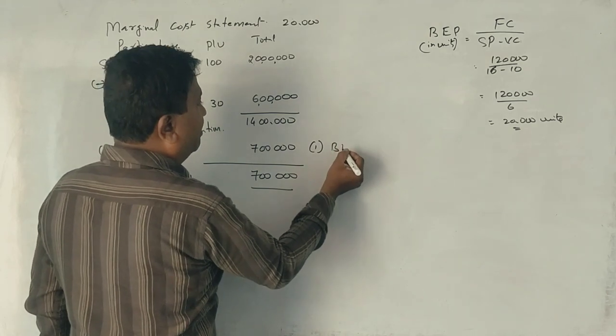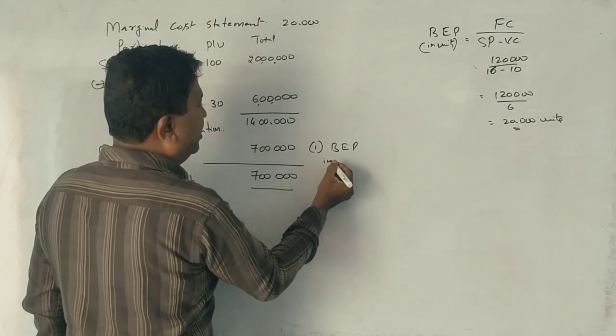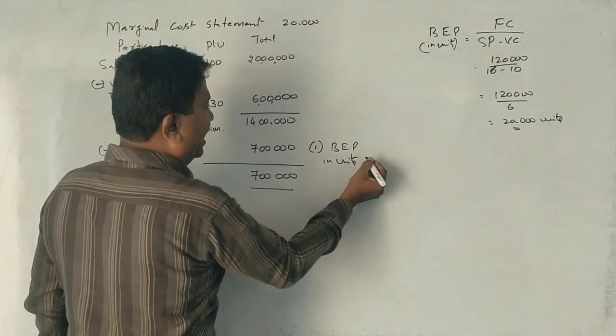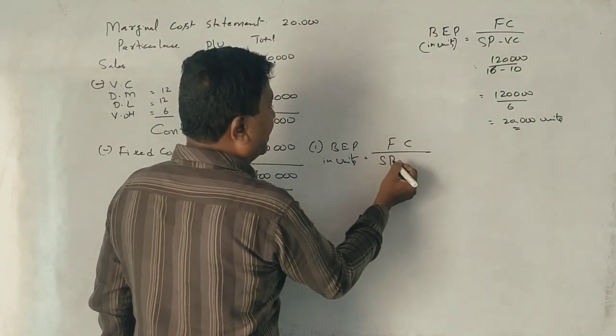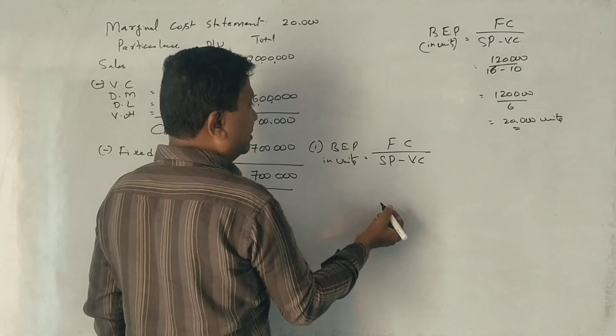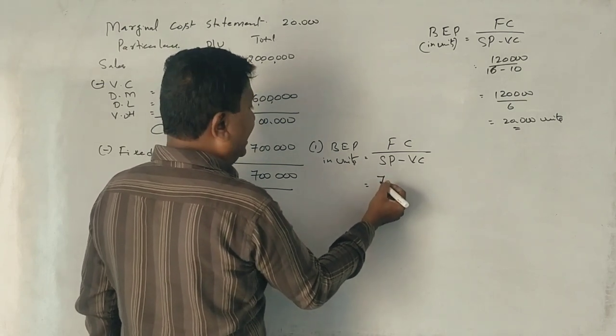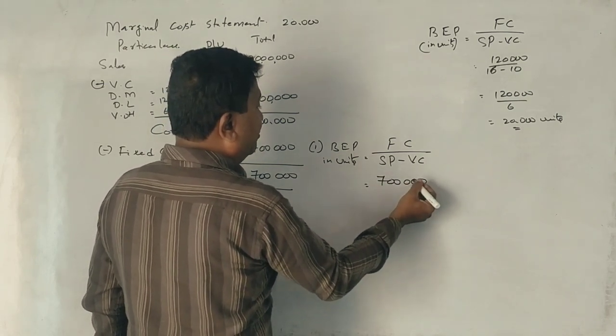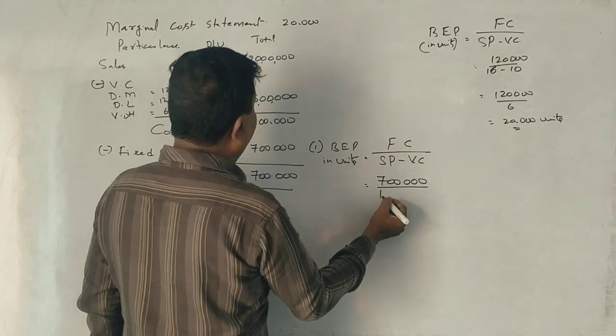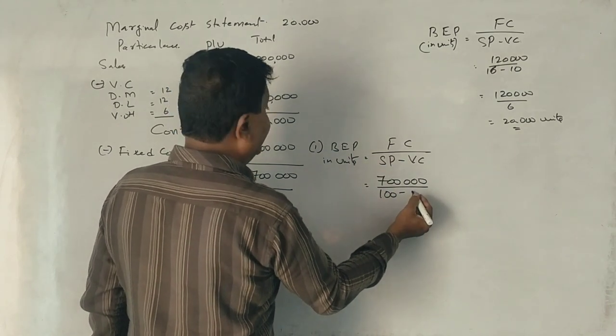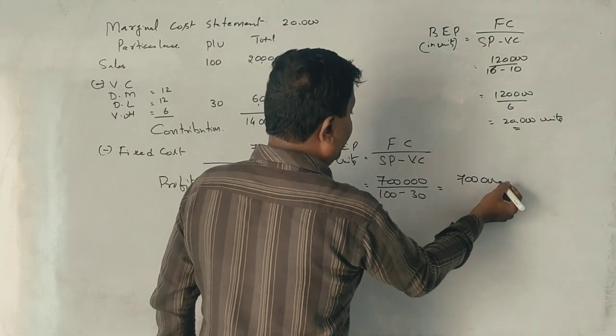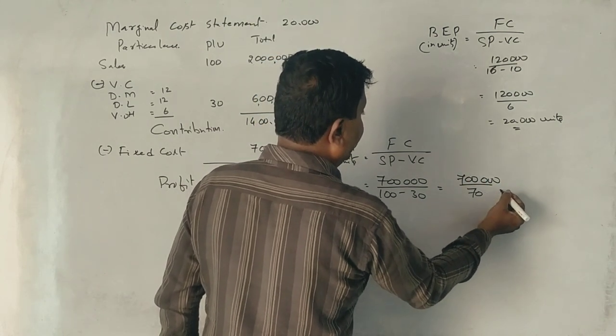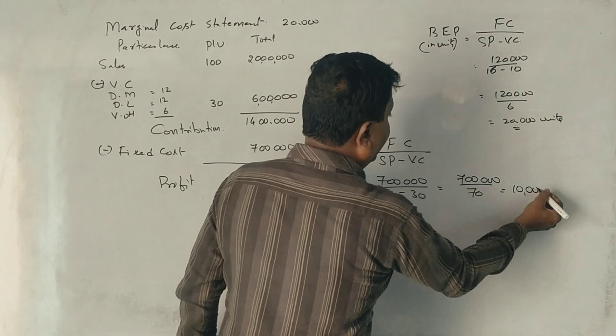This is the break-even point in units and value. This is fixed cost divided by selling price minus variable cost. Fixed cost is 7 lakhs. Selling price is 100. Variable cost is 30. I will get 7 lakhs divided by 70. This is 10,000 units.